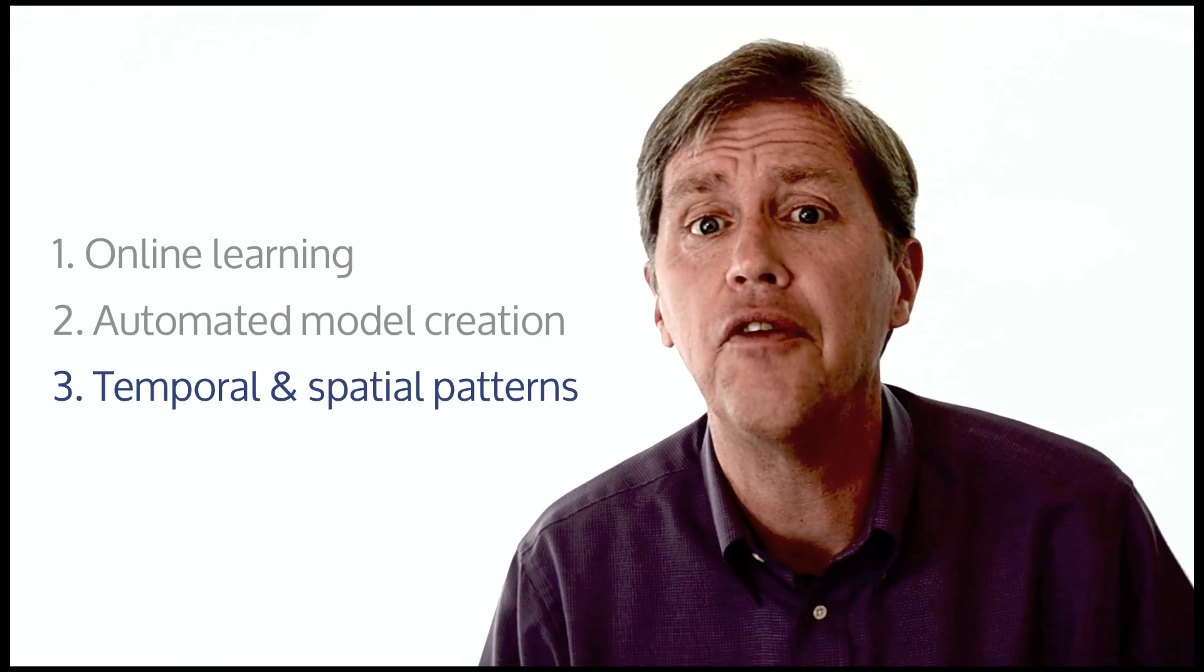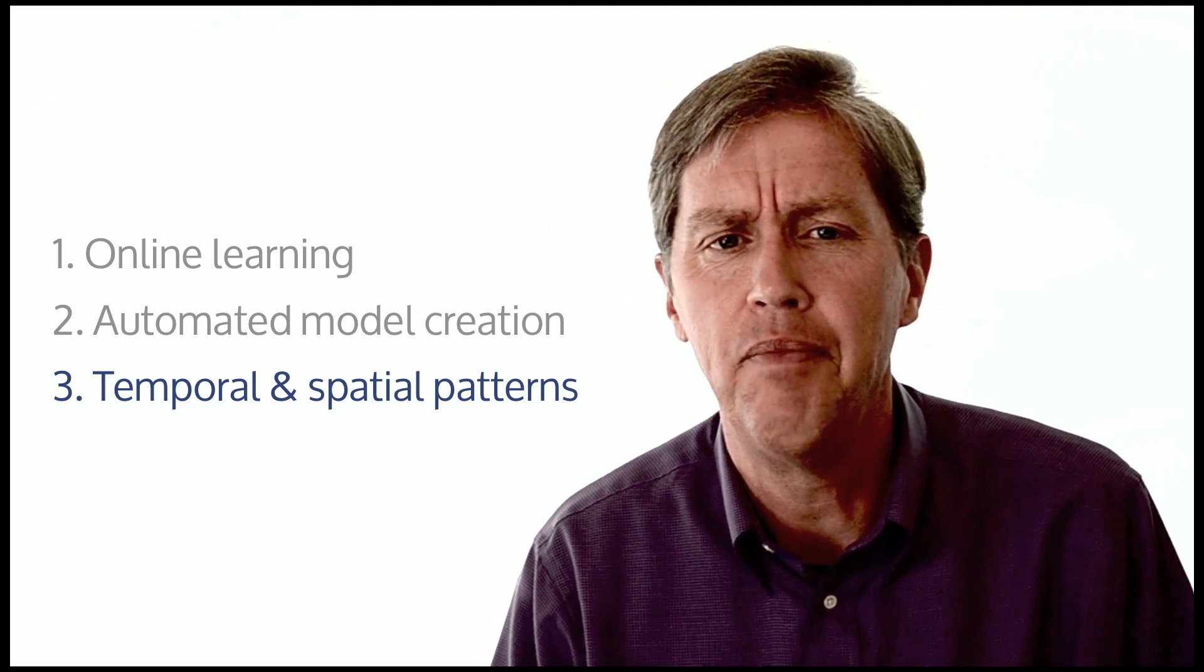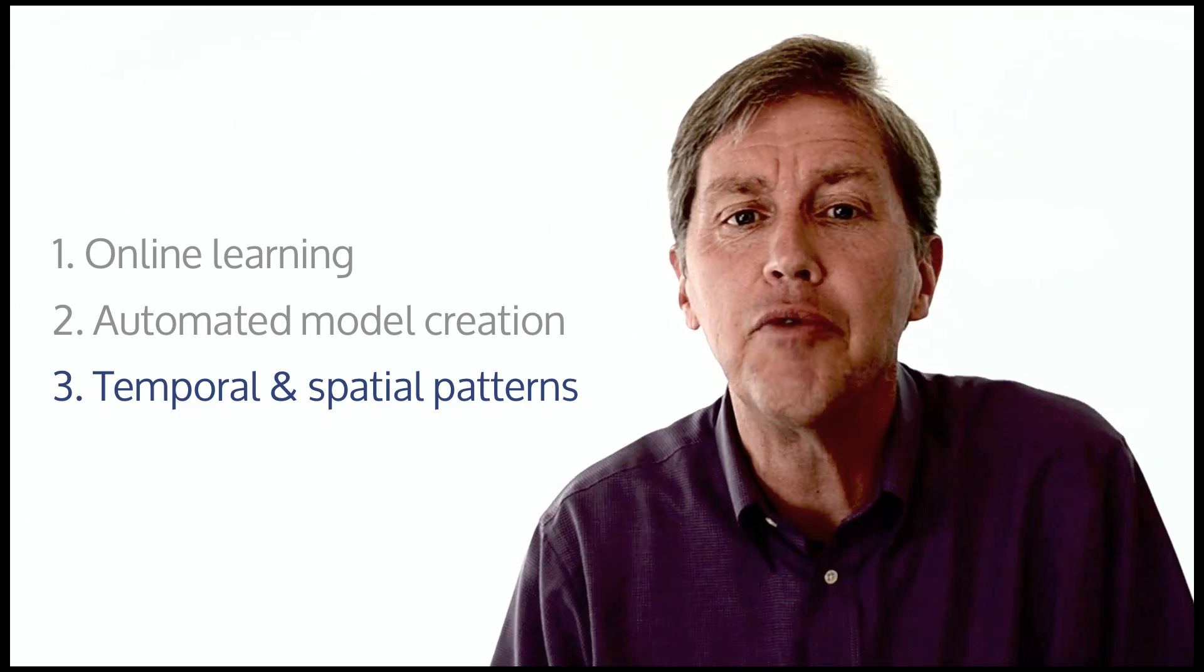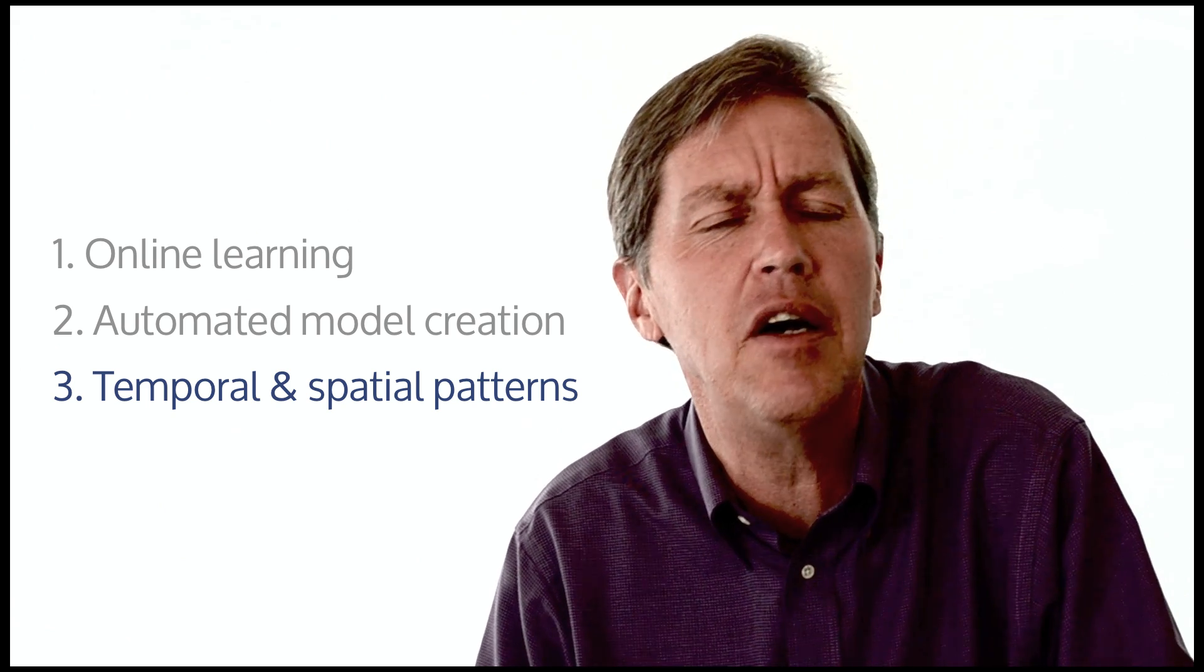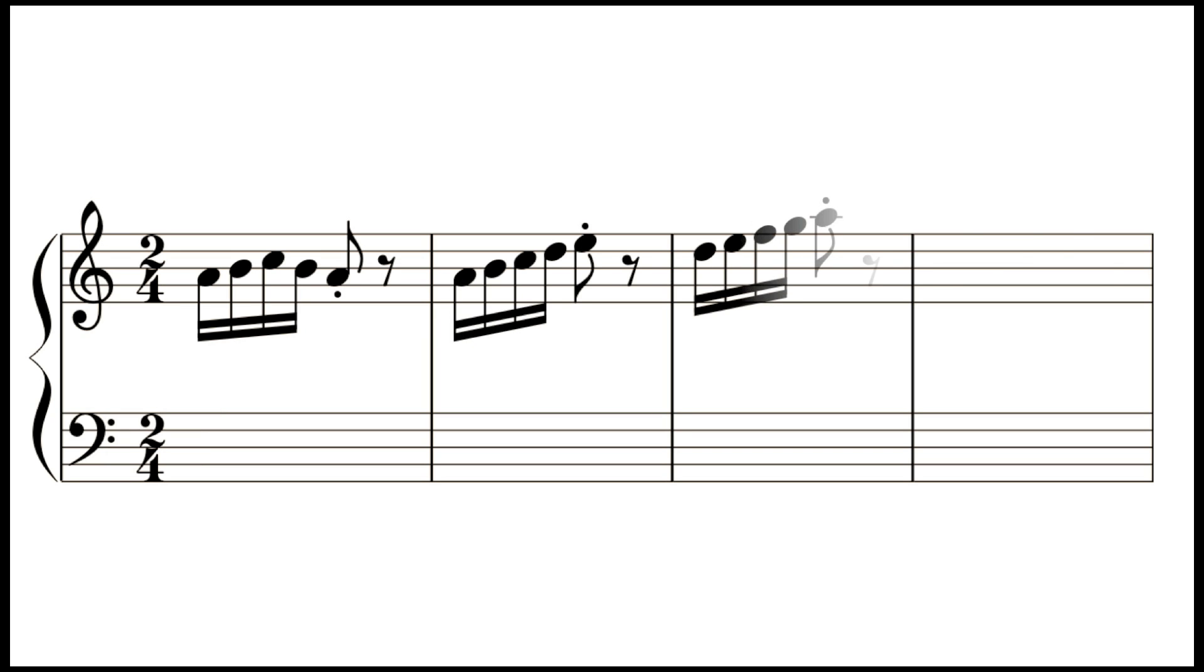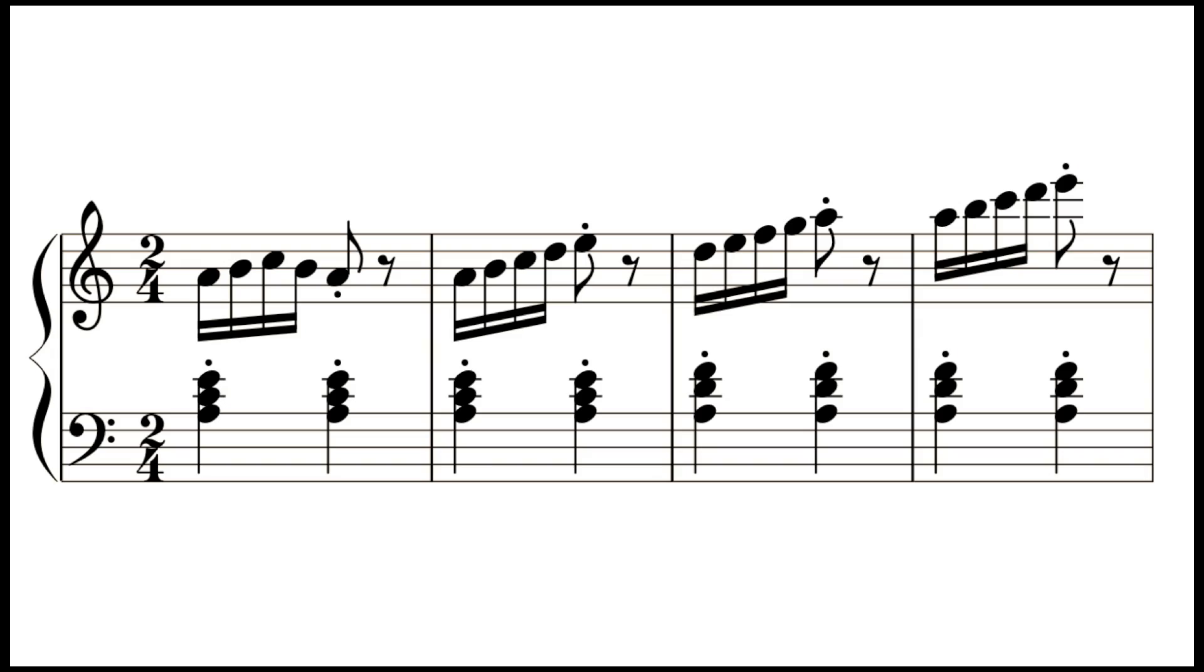Three, Grok needs to find the patterns in your data. Patterns can be spatial or temporal. A spatial pattern is a relationship between things that happen at the same time, like the notes in a musical chord. A temporal pattern is a relationship over time, like the notes in a melody. Most patterns in the world are a combination of spatial and temporal. Most machine learning techniques do not find temporal patterns, but Grok excels at it.